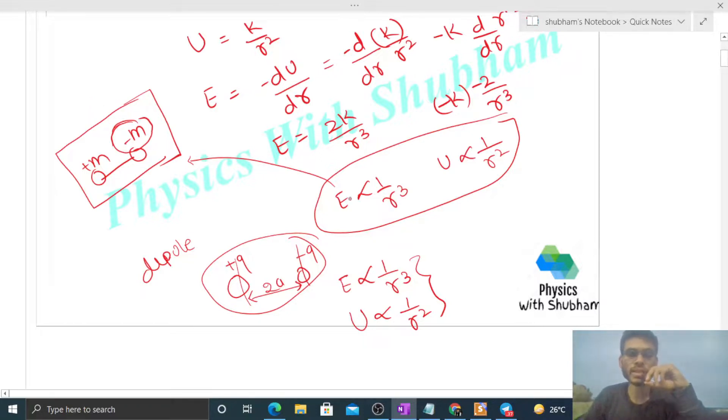But if somehow we assume that negative mass exists, then we can form a dipole whose gravitational field would be inversely proportional to r³ and gravitational potential would be inversely proportional to r².